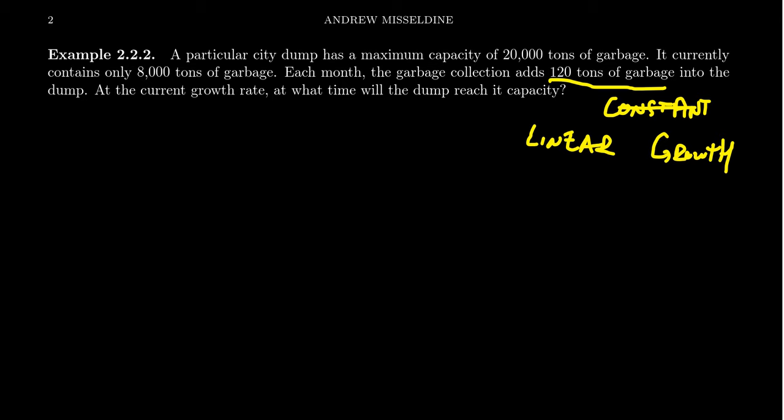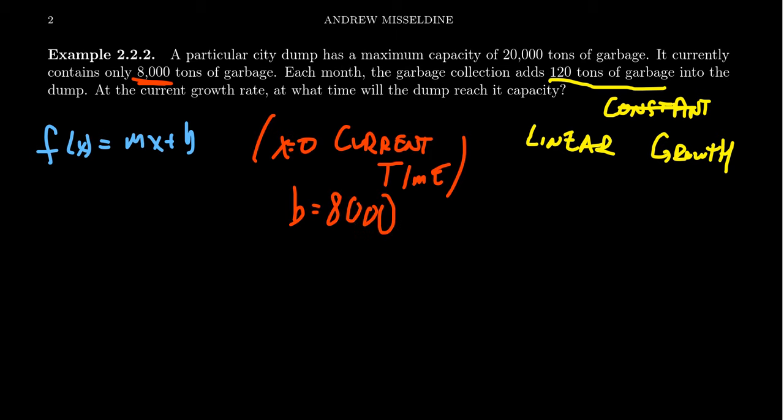So our function is going to look something like f(x) = mx + b. And as a little bit of an aside, I typically will set x = 0 to be the current time, where we are right now. So that means we are currently at 8,000, and so that's actually going to give us our y-intercept. Our y-intercept is currently 8,000. When x = 0, we're at 8,000.